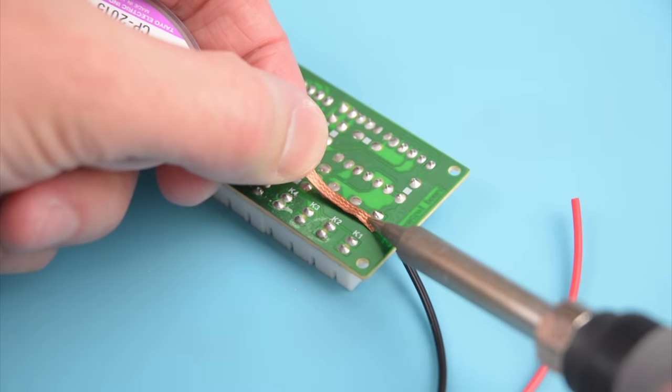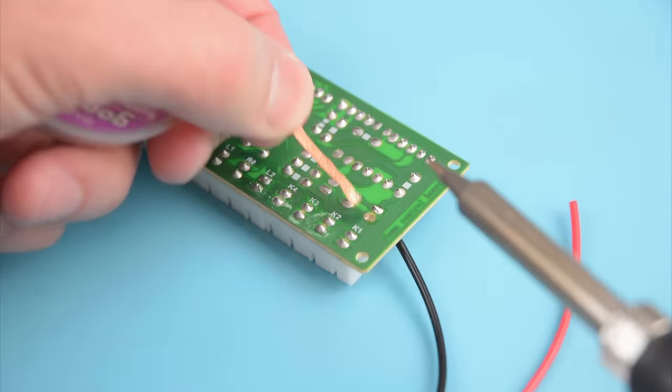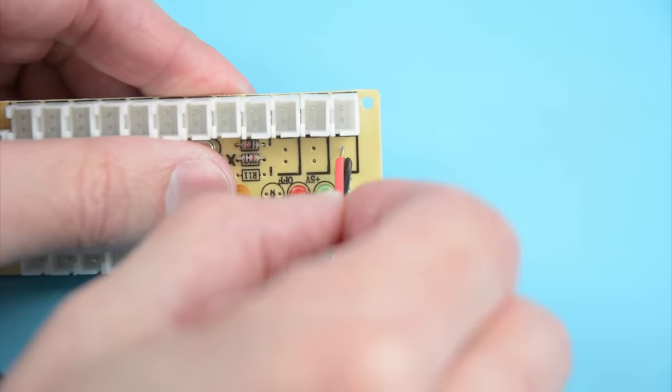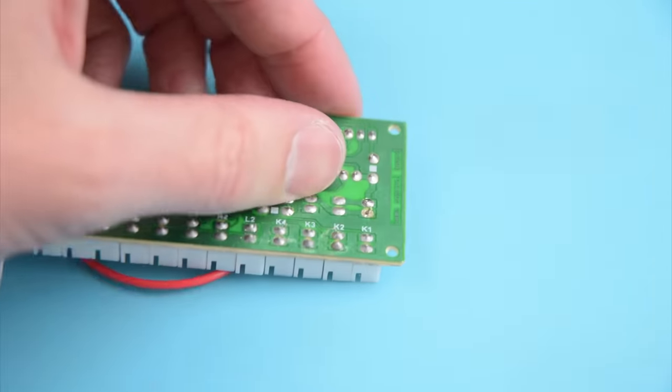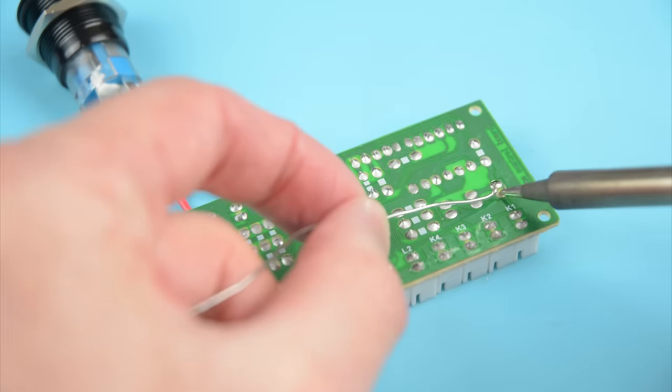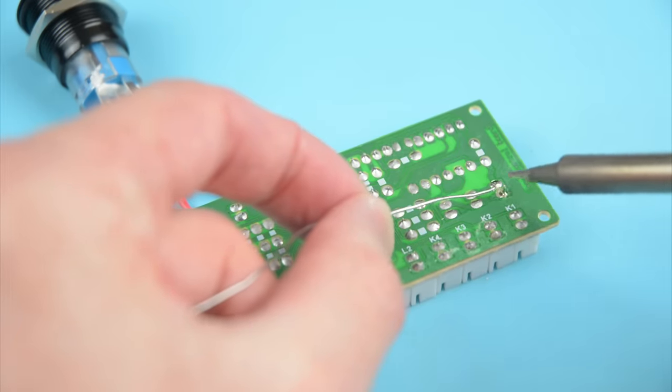By using solder wick, we can prepare and remove the old solder from the board. With the connection free from solder, from the front place the wire into the hole. Then turn the board over, and on the back heat the pad and the wire together with a soldering iron and add solder.